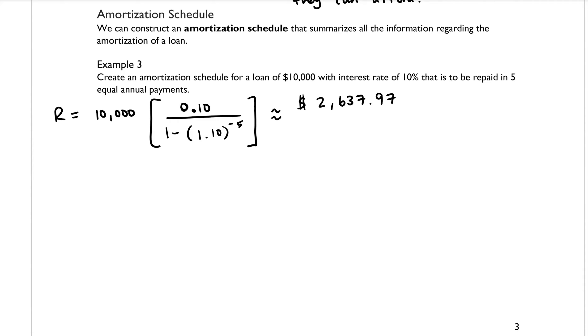And if you throw that into your calculator, you will find that that is $2,637.97. So what that means is over the lifetime of the loan, we are going to be paying five equal payments in the amount of $2,637.97. And a portion of that amount will go to the principal, and a portion of it will go to pay the interest.